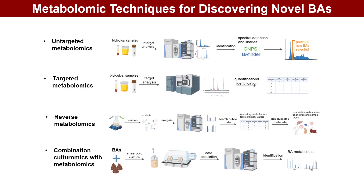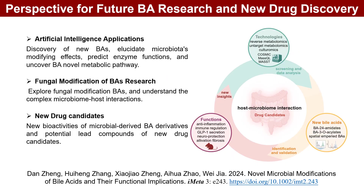Advanced metabolomic techniques have facilitated the discovery of novel BA molecules. Untargeted metabolomics is crucial for identifying potential new BA derivatives with distinct MS/MS behaviors. Targeted metabolomics, which specializes in quantifying known BAs, plays a complementary role. Reverse metabolomics is a novel technique for discovering novel metabolites, and the combination of culturomics with metabolomics has proven successful for uncovering novel BAs in biological samples. Artificial intelligence is revolutionizing biomedicine by accelerating the discovery of new BAs, clarifying microbiota's modifying effects, predicting enzyme functions, and revealing new metabolic pathways.